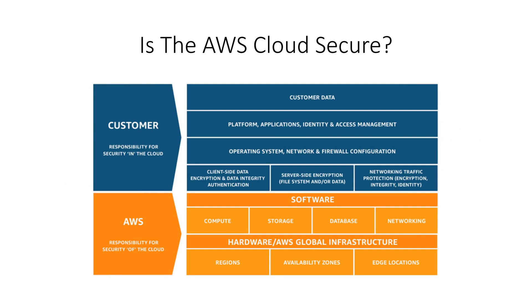AWS is responsible for securing the underlying infrastructure that supports the cloud, and you are responsible for anything you put on the cloud or connect to the cloud. You can build on the AWS global infrastructure — designed to meet the most stringent security requirements in the world — knowing you always control your data, including the ability to encrypt it, move it, and manage retention at any time.